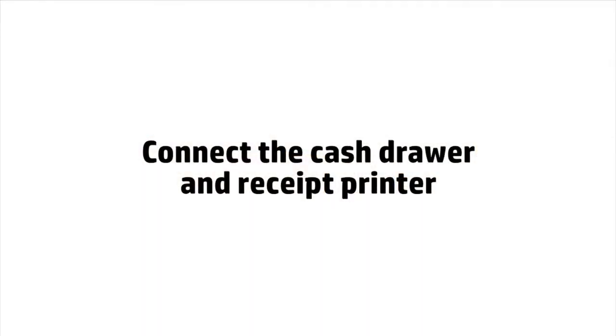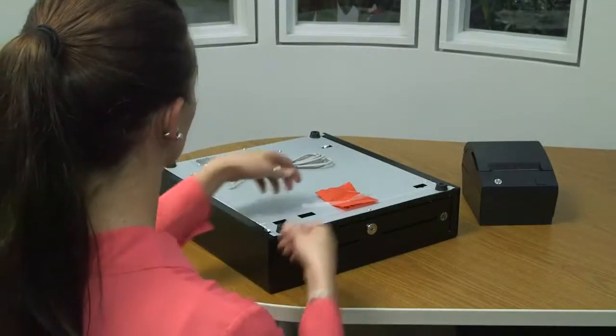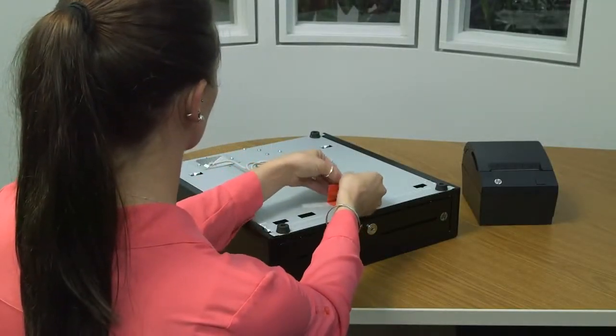For the final steps, you will need the cash drawer, receipt printer, power supply and USB cable. Locate the keys and network cable on the underside of the cash drawer.